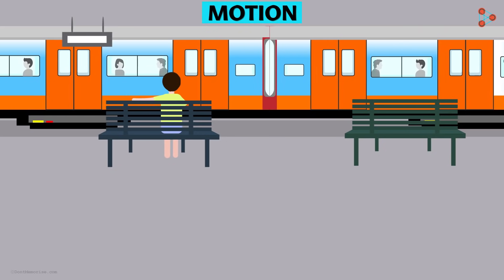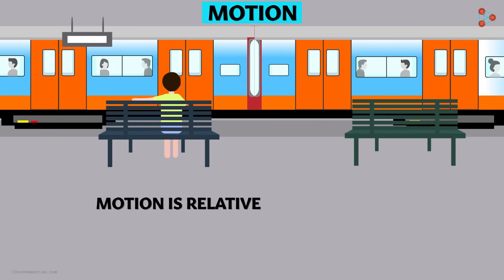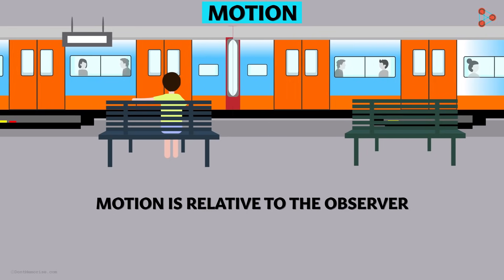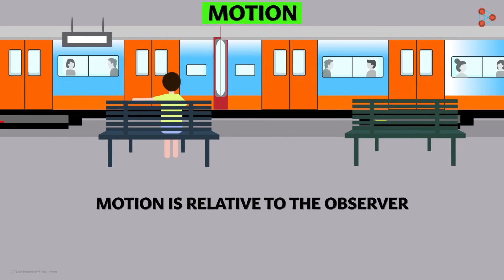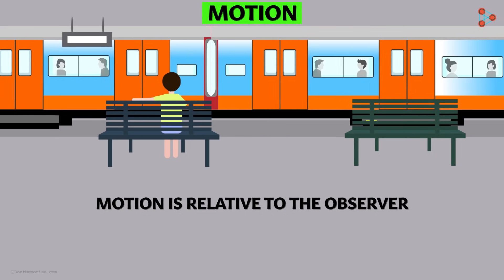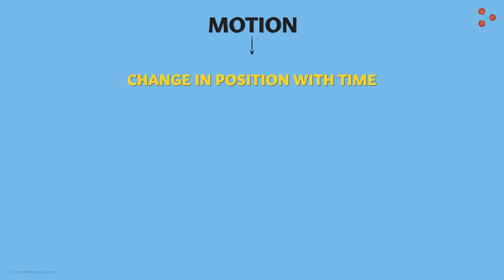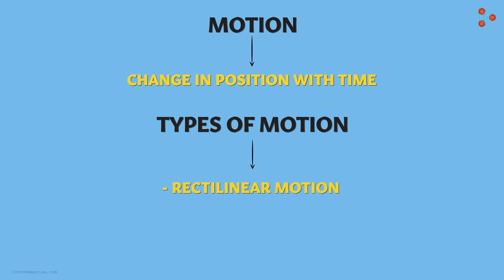This means that the motion of any object is relative to the observer. For different observers, the motion may be different. We will learn more about this in higher grades. In this video, we understood the definition of motion and discussed one of the types of motion called rectilinear motion. In the next video, we will see a few other types of motion.